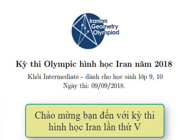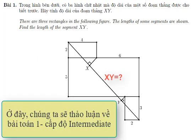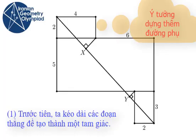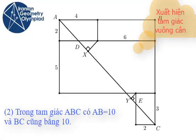Welcome to Fifth Iranian Geometry Olympiad solution guide. Here we will discuss problem 1 of the intermediate exam. First, we continue this line and this line to make a complete triangle.